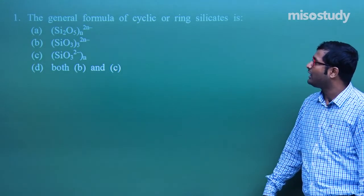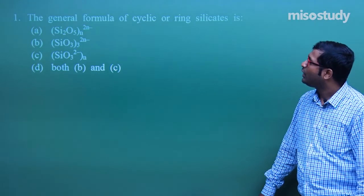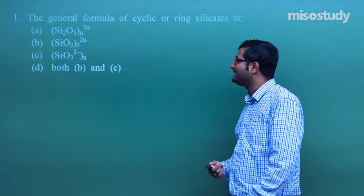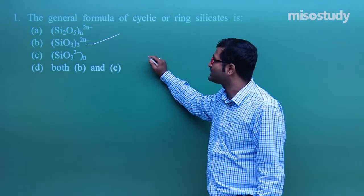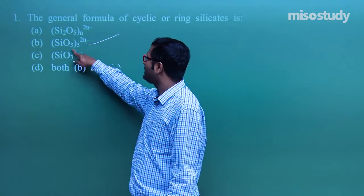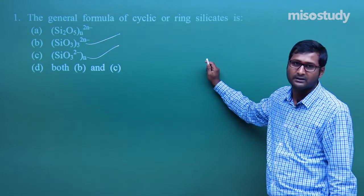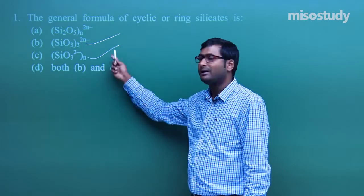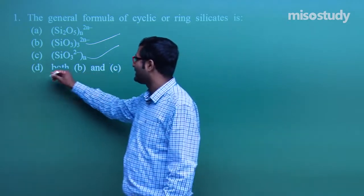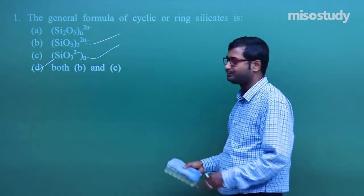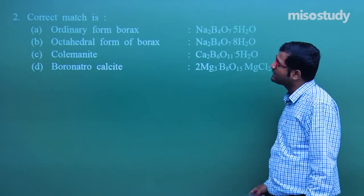The first question: what is the general formula of cyclic or ring silicate? This is a completely theory-based question. The formula of cyclic or ring silicate is SiO₃²⁻. So both B and C represent the correct formula, making D the correct option — both B and C.